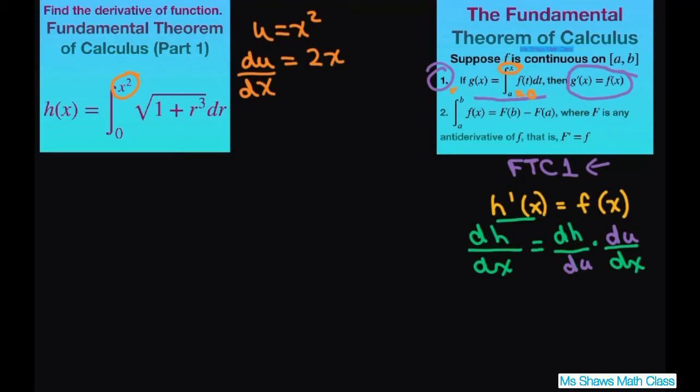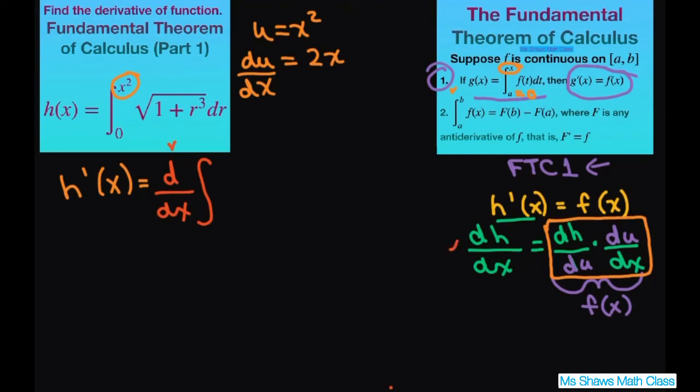So this part here equals your F of X. So what we have to do, our goal is to get it to look like this. So let's go ahead and take our derivative. H prime of X equals, and just copy this. This is where we're going to be taking the derivative with respect to X. Remember writing it like this is just a verb. Writing it like this is a noun. So we're going to write X squared, zero, and then square root of 1 plus R cubed, DR.